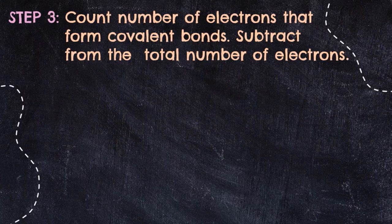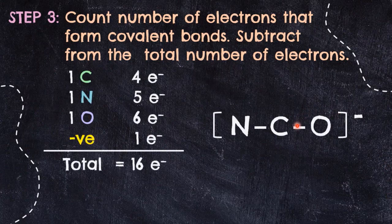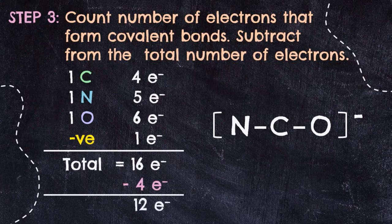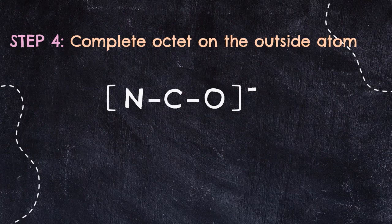Proceeding to step 3, count the number of electrons from the bonds drawn. Each bond consists of 2 electrons, so the 2 bonds give us 4 electrons — subtract 4 from 16, leaving 12 electrons. The remaining 12 electrons are distributed to all terminal atoms as lone pairs. Nitrogen receives 3 lone pairs (6 electrons), and oxygen also receives 3 lone pairs (6 electrons). Note this is not applicable to hydrogen, which only forms a duplet.